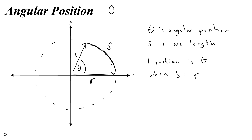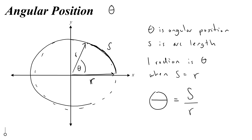The way we express this mathematically is by saying that theta in radians is equal to the ratio of s, your arc length, divided by r. So you basically just take how far you've gone around the circle, and then chop it up into radiuses — saying I've gone one radius, two radius, three radius, or rads, and so on.